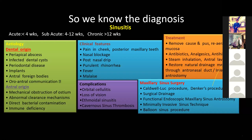Thinning the secretions present inside the sinus allows them to pass out from the ostium. When there is bacterial invasion and you have purulent discharges coming from the nose with thicker mucus, that is the time to start antibiotics. Antibiotics have a negligible role in viral infection — they only play a role when there is bacterial superimposed infection.